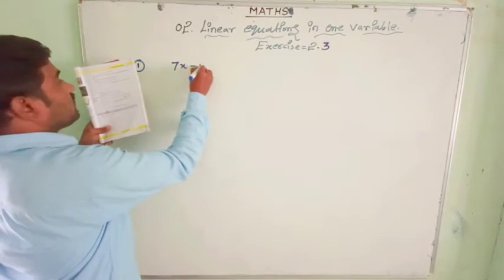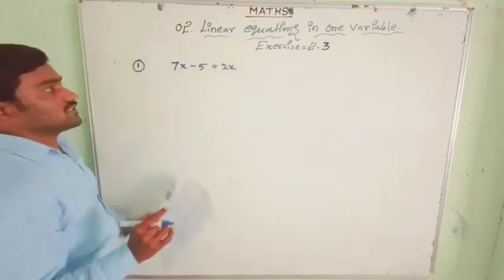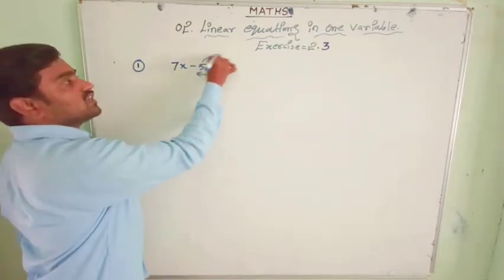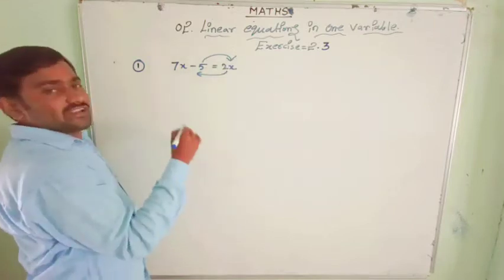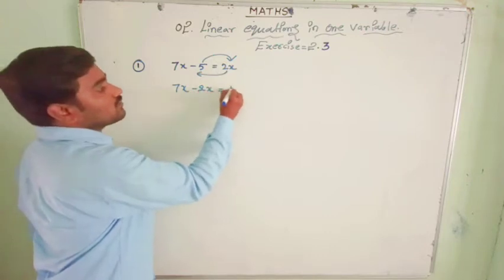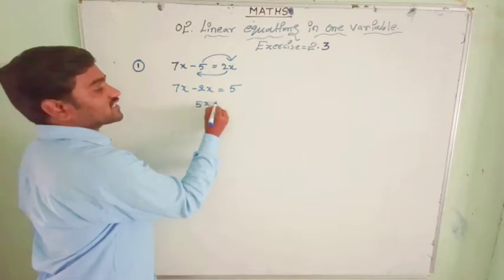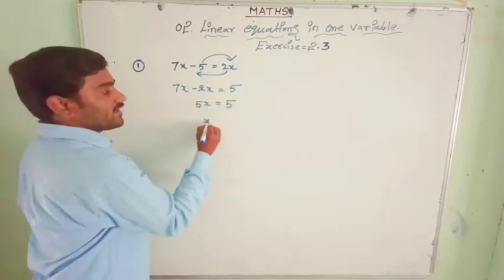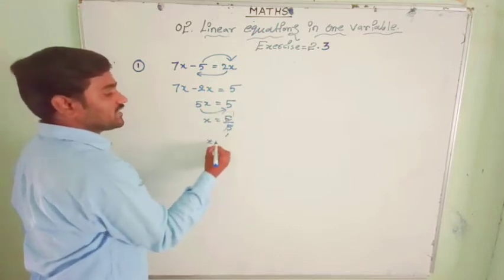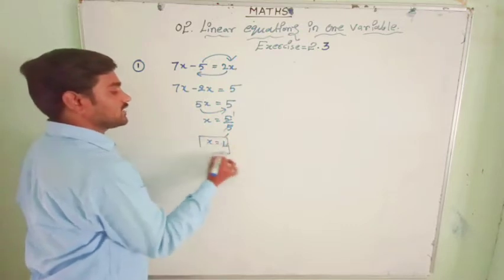The first problem: 7x minus 5 equal to 2x. The variables will transfer to one side and constant numbers will go to one side. So 7x minus 2x equals 5, and minus 5 becomes plus 5. 7x minus 2x is 5x, so 5x equal to 5. Therefore x equal to 5 by 5, which is 1.